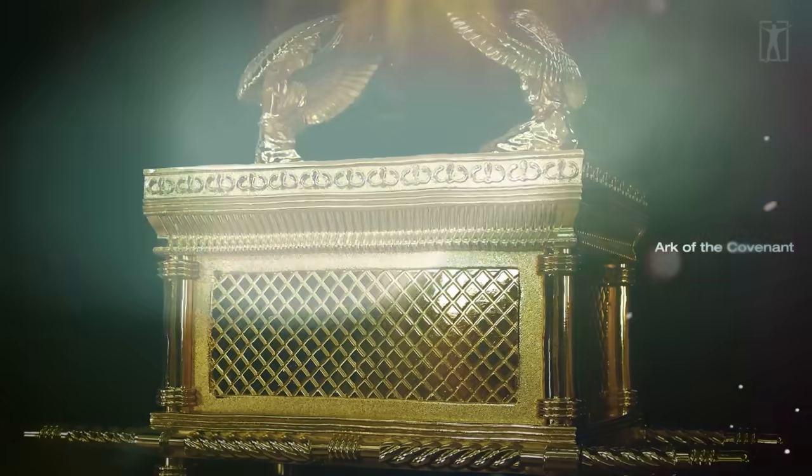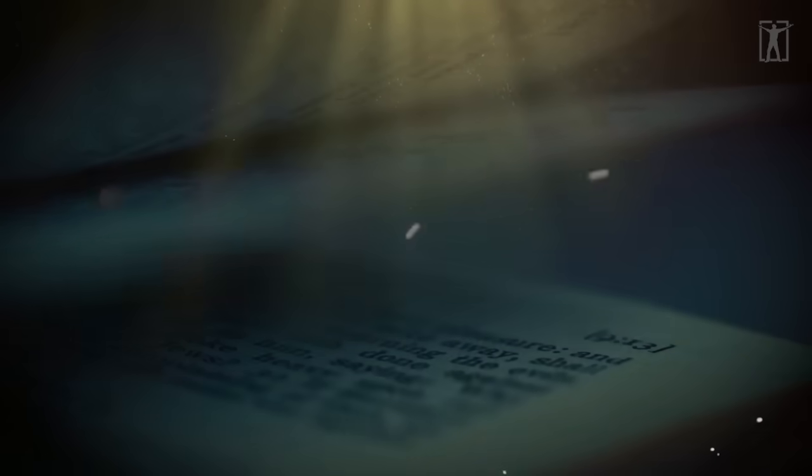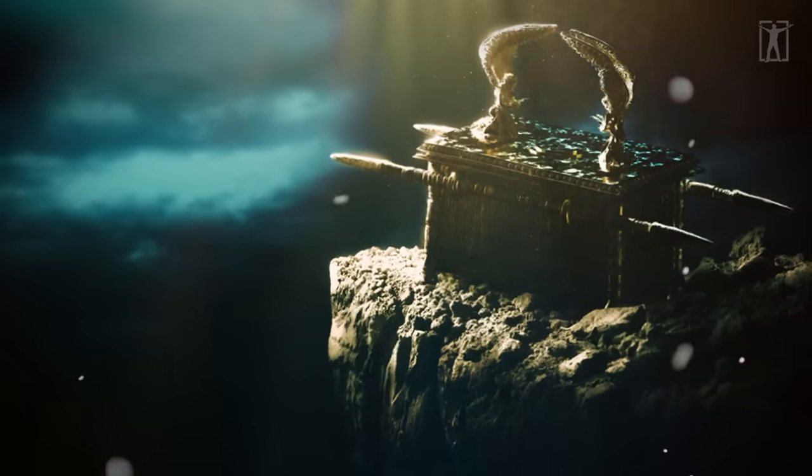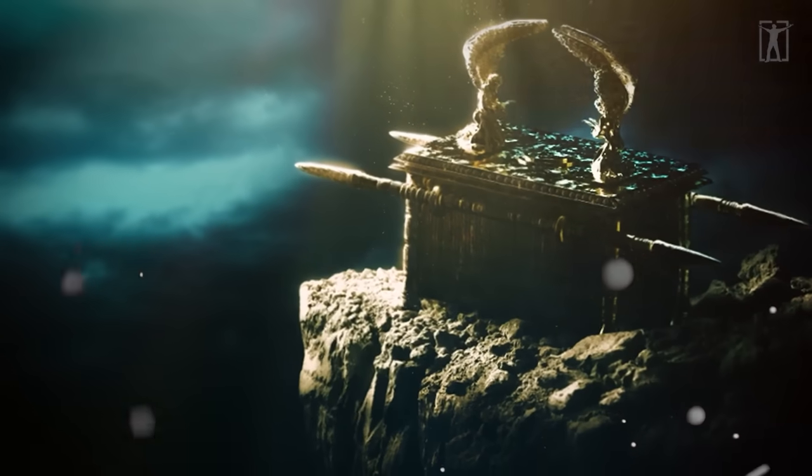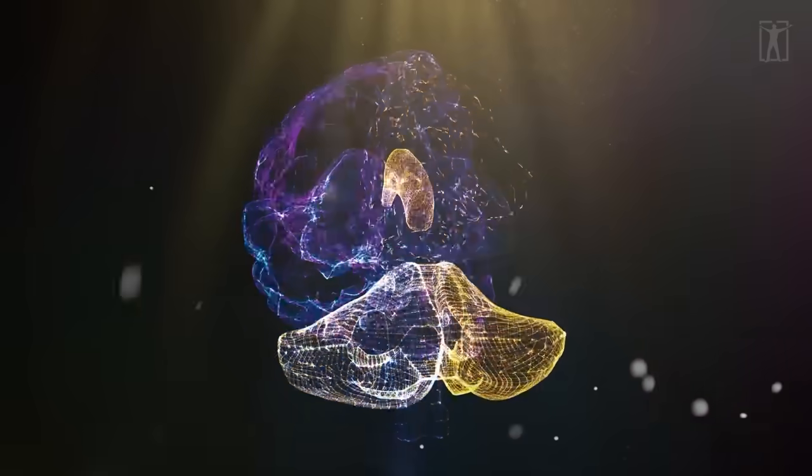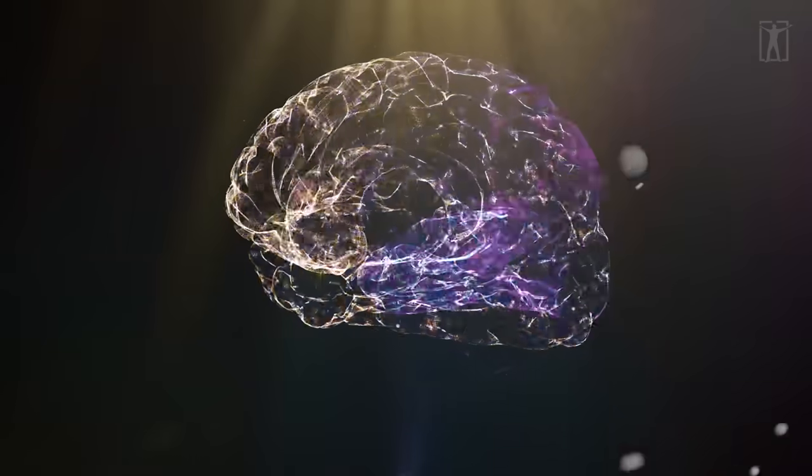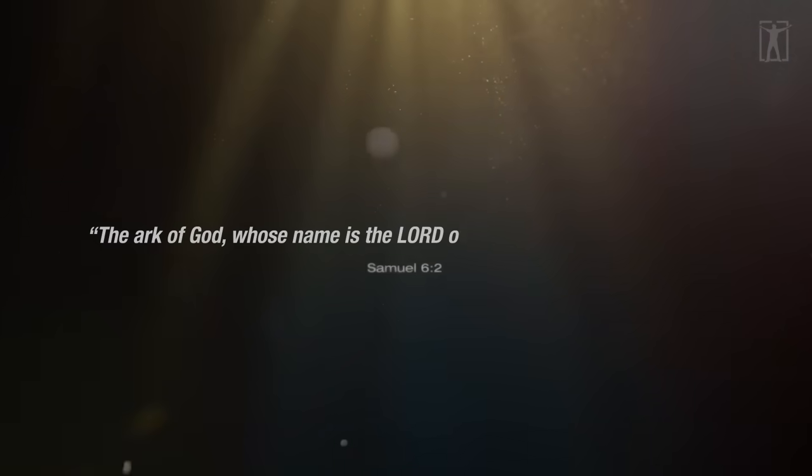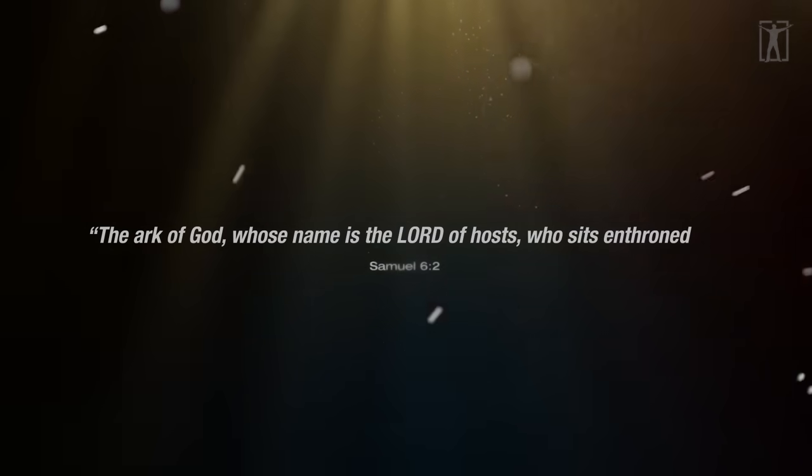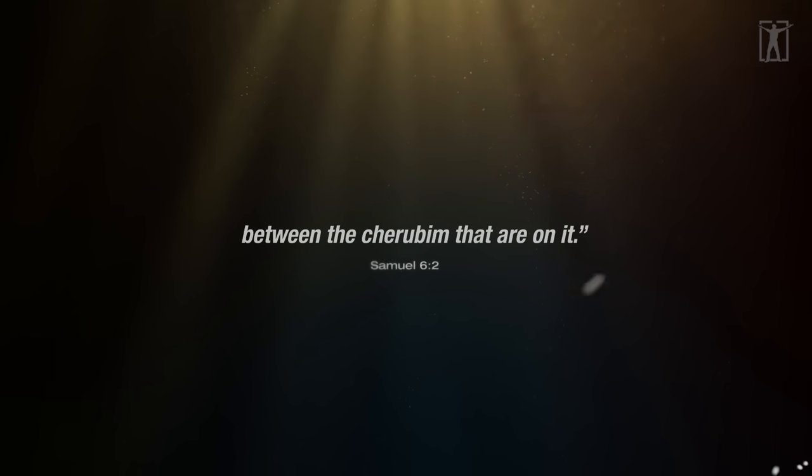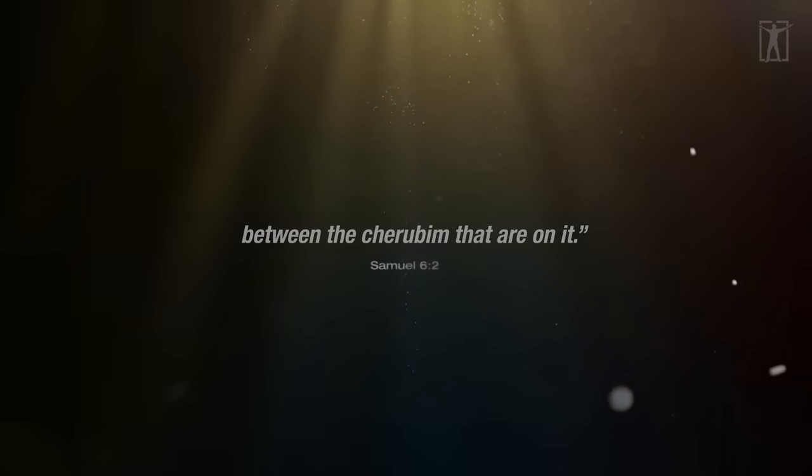This secret reveals the location of the Ark of the Covenant. The Bible depicts the Ark with two cherubim and two covering angels. This is the cerebrum, which has two hemispheres to protect the cerebellum and the inner brain. The Ark of God, whose name is the Lord of hosts, who sits enthroned between the cherubim that are on it. Samuel 6, verse 2.